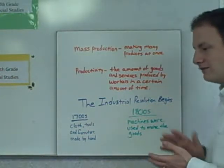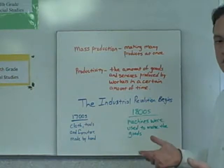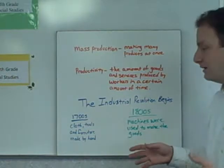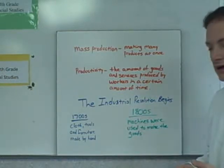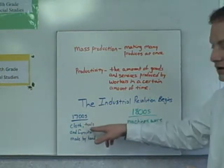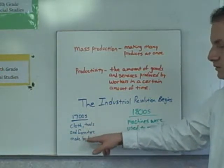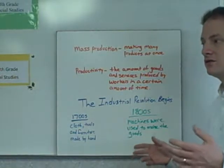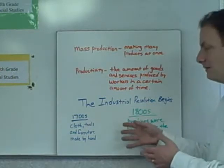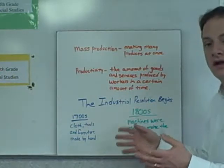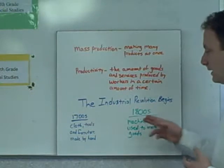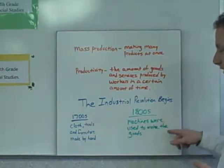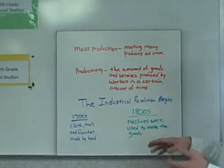The Industrial Revolution begins — but first, what was life like in the early 1700s in America? For most people, if they needed items they had to make them by hand. In the 1700s, cloth, tools, and furniture were all made by hand. In the 1800s, however, things began to change and machines were used to make goods.